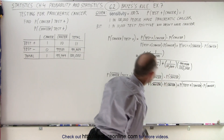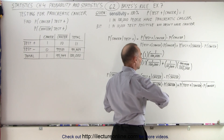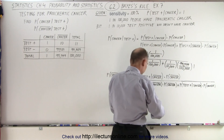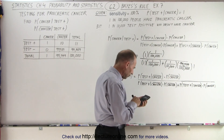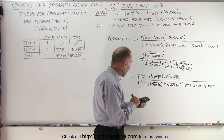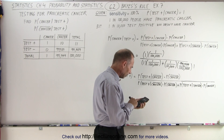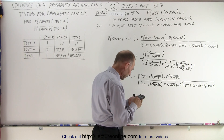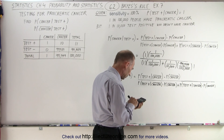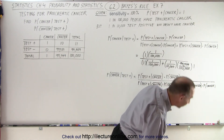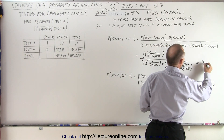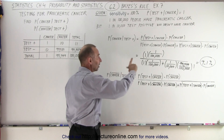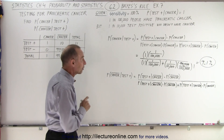All right, so with a calculator — in the denominator we have 1 divided by 10,000 plus 1 divided by 100,000. We take the inverse of that and multiply by, or divide by, 100,000. And we get 9.09%, so about 9.1%. So that means that if you test positive with this test, there's a 9.1% chance that you have pancreatic cancer.